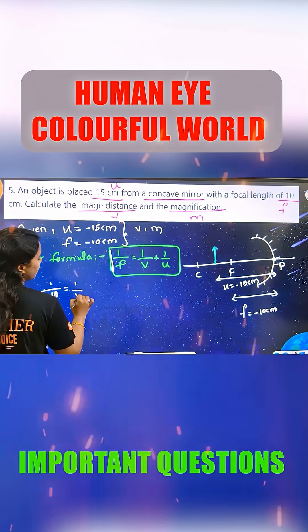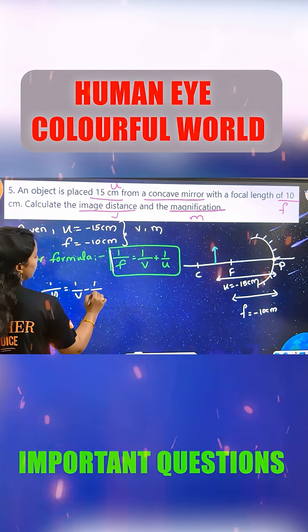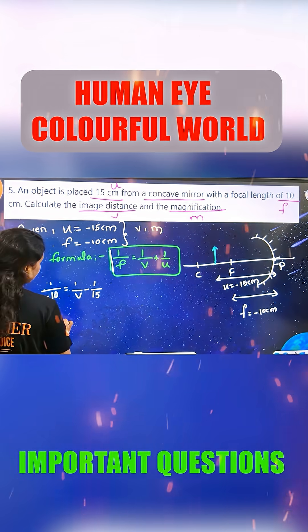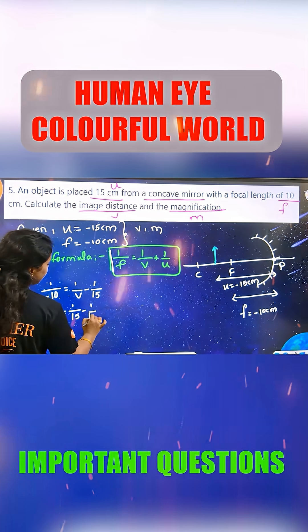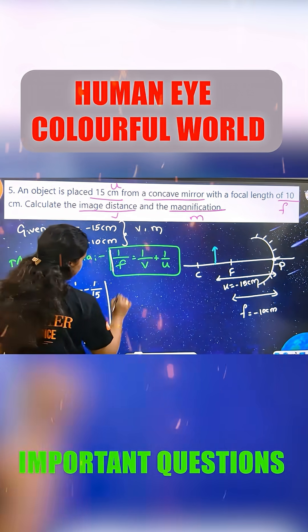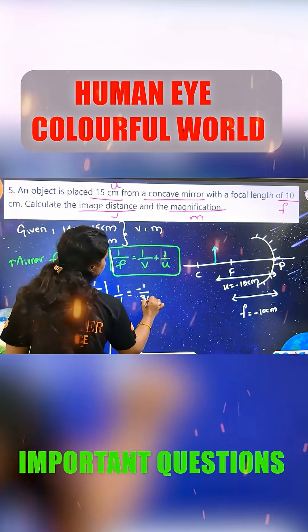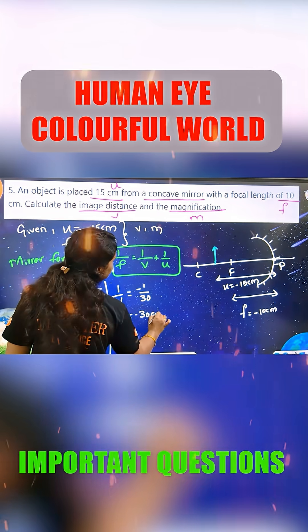1 by minus 10 that is equal to 1 by V minus 1 by 15. This minus 1 by 15 is equal to plus 1 by 15. So minus 1 by 10, 30. So 1 by V is equal to minus 1 by 30. V equals minus 30 cm.